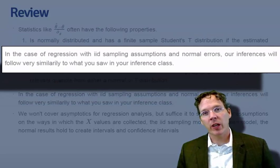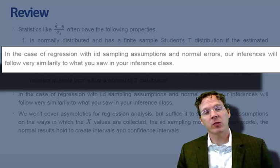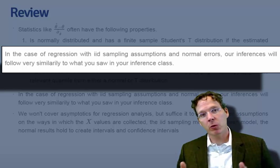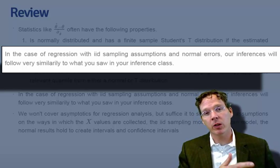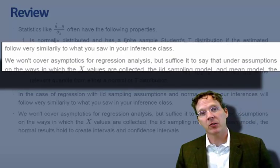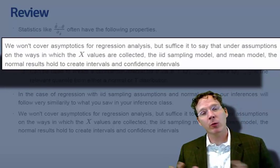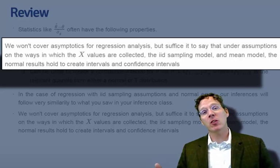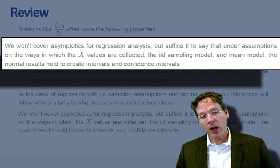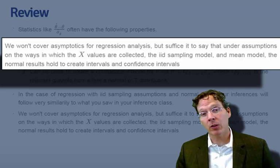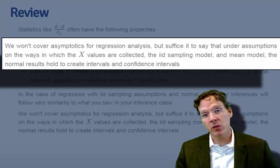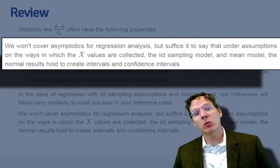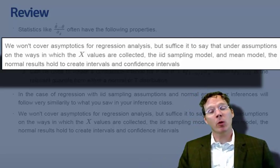In the regression case, with IID sampling assumptions for our normally distributed errors, inference will follow along these lines very similarly to what you saw in that class. And we're not going to cover at all asymptotics for regression analysis. But suffice it to say, it's not mandatory for the errors to be Gaussian for our statistical inferences in regression to hold. You can appeal to large sample theory, though it's a little bit more complicated.